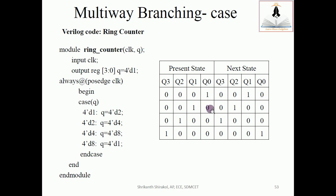It is taking a left shift. When this becomes the present state, its next state would be one-time left shifted, and again one-time left shifted will give you 1000, and one-time left shift of this will give you 0001. This is how the ring counter design works — this is a left shift ring counter. You can repeat the same procedure for a right shift ring counter also.